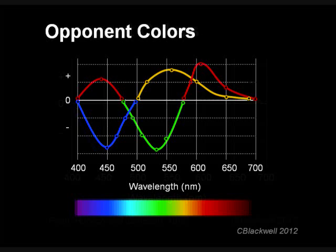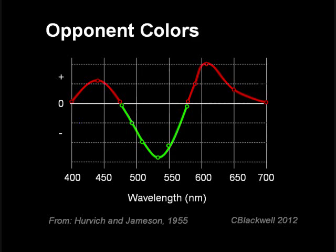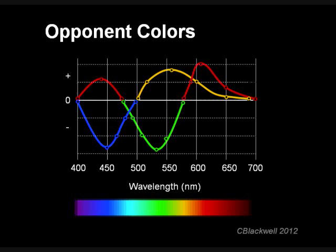Here is another way of looking at the result of opponent color response. In the blue versus yellow channel, below 500 nm the blue side dominates; above 500 nm, yellow dominates. The red versus green channel shows red dominating at each end and green in the middle. When you put the opponent channel functions together, here is the result. Take blue at 450 nm: the red channel has input, as does the blue channel, and the sum of the two inputs is this specific blue. Every color is perceived through a balance between the two channels.